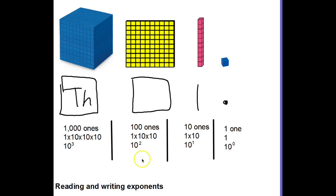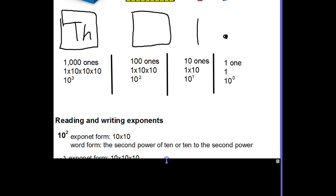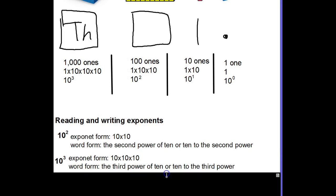This is how powers of 10 and bases relate to exponents. Now let's look at how to read and write exponents. Reading and writing exponents is fairly simple — we have two forms: exponent form and word form. For 10 to the second power, exponent form is 10 times 10, and word form is 'the second power of 10' or '10 to the second power.' For 10 to the third power, exponent form is 10 times 10 times 10, and word form is 'the third power of 10' or '10 to the third power.'